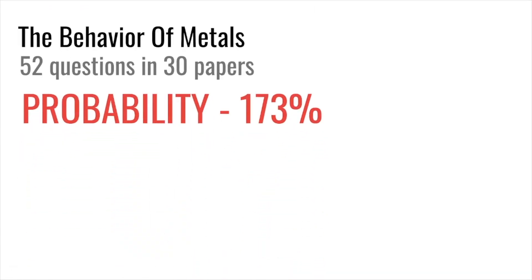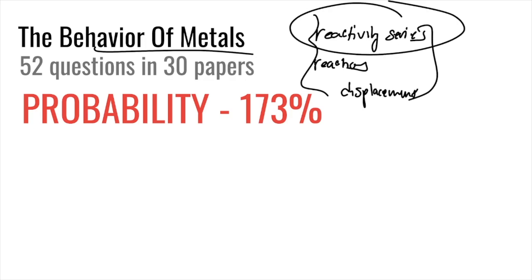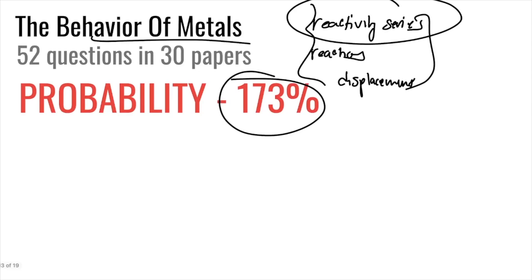Behavior of metals has a 173% probability — almost two questions per paper. This covers the reactivity series: if you react zinc with iron or zinc with hydrogen, does it displace? It also includes displacement reactions with Group 17 — for example, does fluorine displace chlorine? You need to memorize the full reactivity series in order.